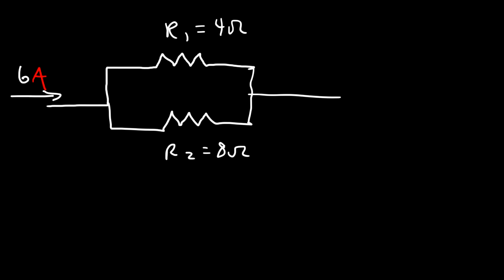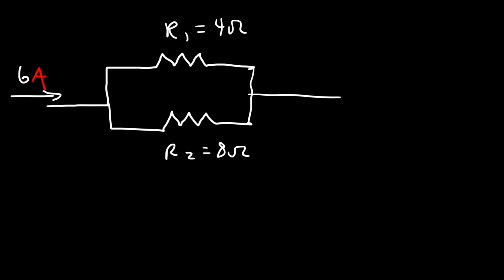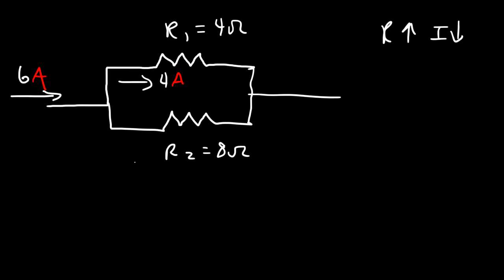Notice that the 8-ohm resistor is twice the value of the 4-ohm resistor, so the current in that branch has to be half of the current in the other branch, because increasing resistance decreases current. We need two numbers that add up to six where one is twice the other — so 4 amps flows through R1 and 2 amps through R2. Two plus four adds up to six.